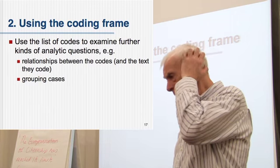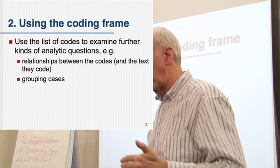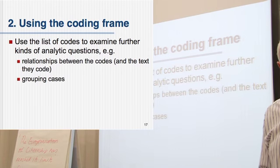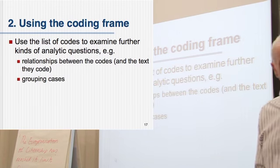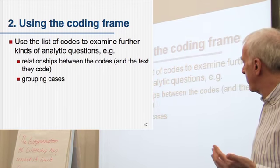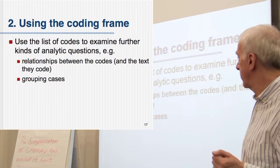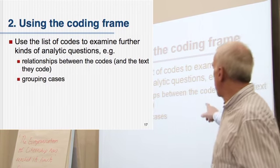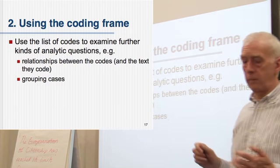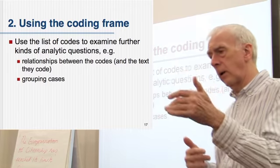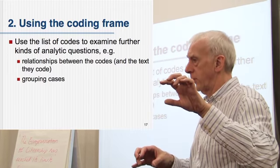On the other hand, as I said, you can use the coding frame, the list of codes, and start working with that. Well, several things to be said about this. You can begin to use that to think up new analytic questions about the data, which you can't necessarily answer with the coding scheme itself, you must do more work with it. But you can start to look at the relationship between the codes and the text they code. So you might say, ah, what's the relationship between this code and that code? People who tend to say that also do this.